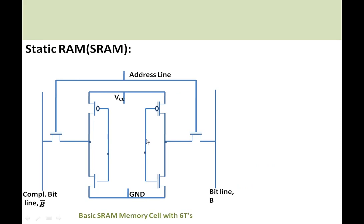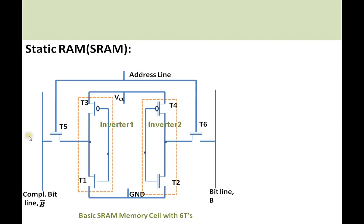Coming to static RAM memory, here you can see the basic SRAM memory cell, which stores one bit of data using six switches. T1 and T2 are NMOS switches, T3 and T4 are PMOS switches, and T5 and T6 are pass switches which are also NMOS type. This forms inverter 1 and inverter 2, each made of a PMOS and NMOS switch.